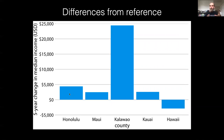doesn't violate this principle because it still represents the actual amount. It's just that now we're looking at a change relative to a reference group.